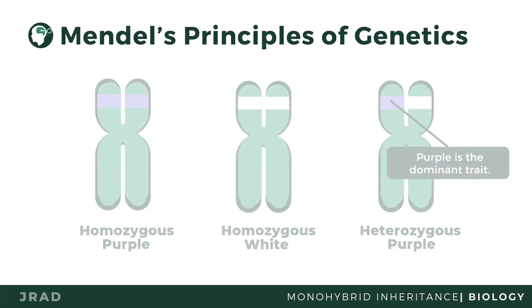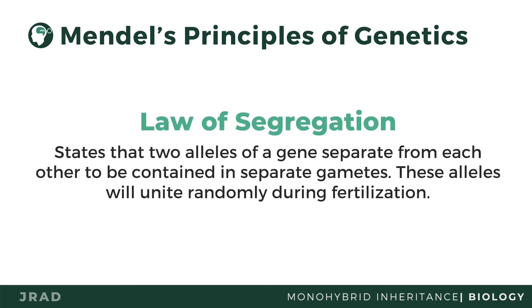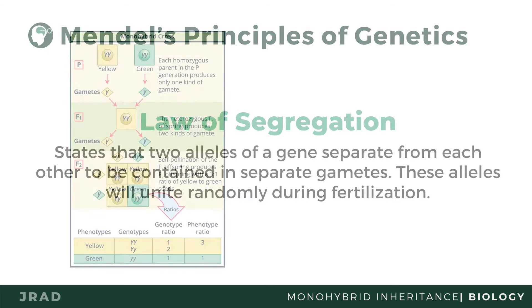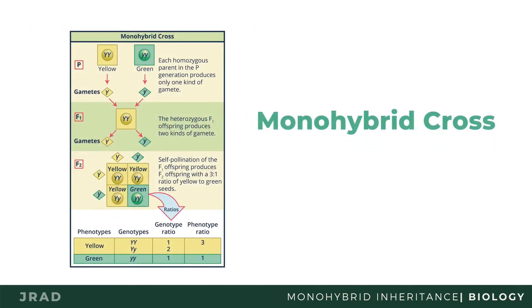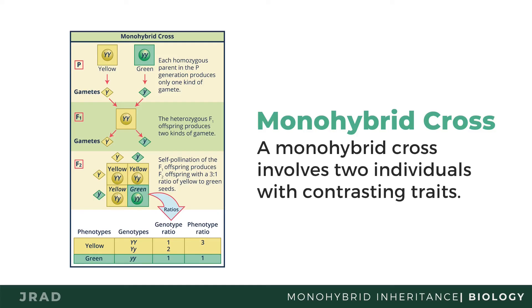The law of segregation states that two alleles of a gene separate from each other to be contained in separate sex cells. These alleles will unite randomly during fertilization. If an offspring is known to be heterozygous for a single trait, it is referred to as monohybrid. A test cross is used to determine whether an individual is dominant for a particular trait — that is, homozygous or heterozygous for that trait.